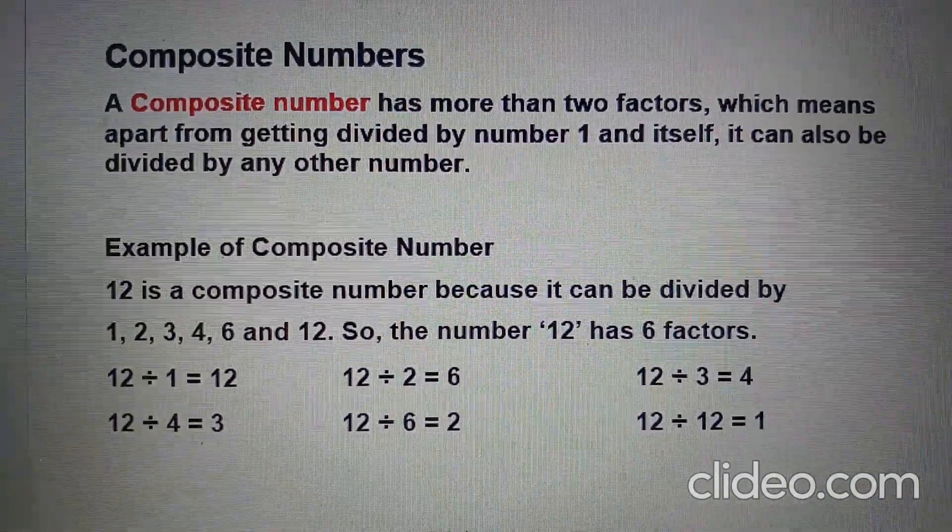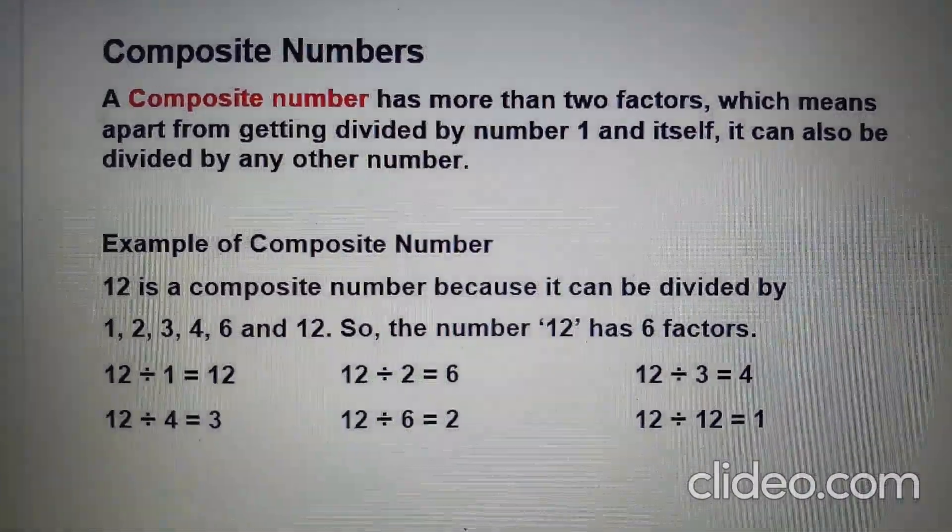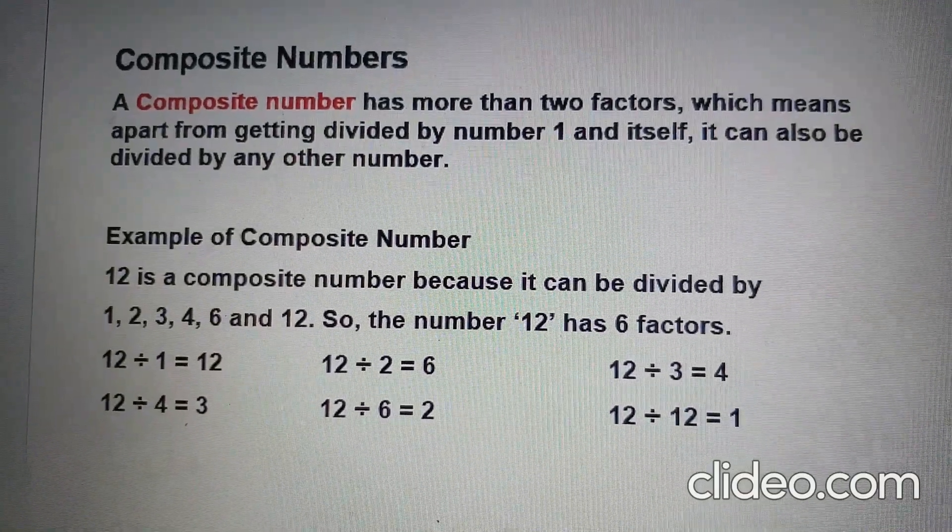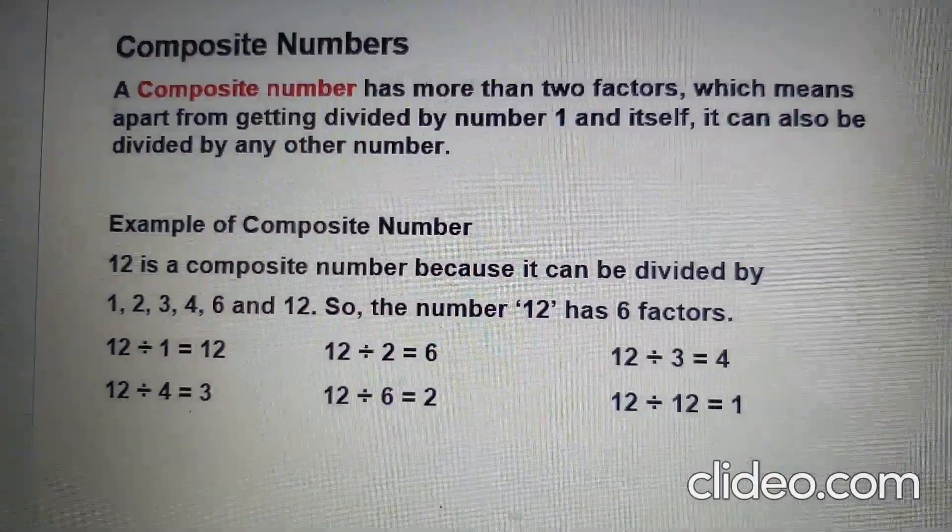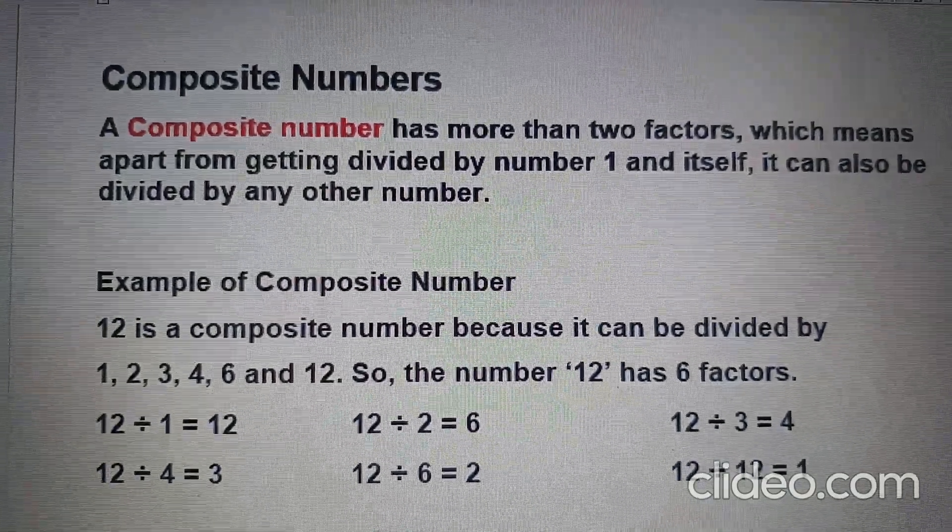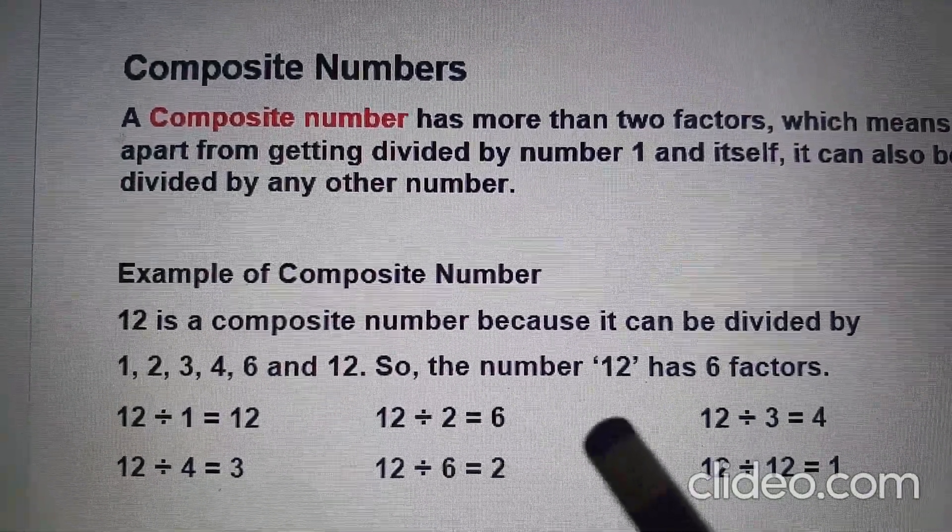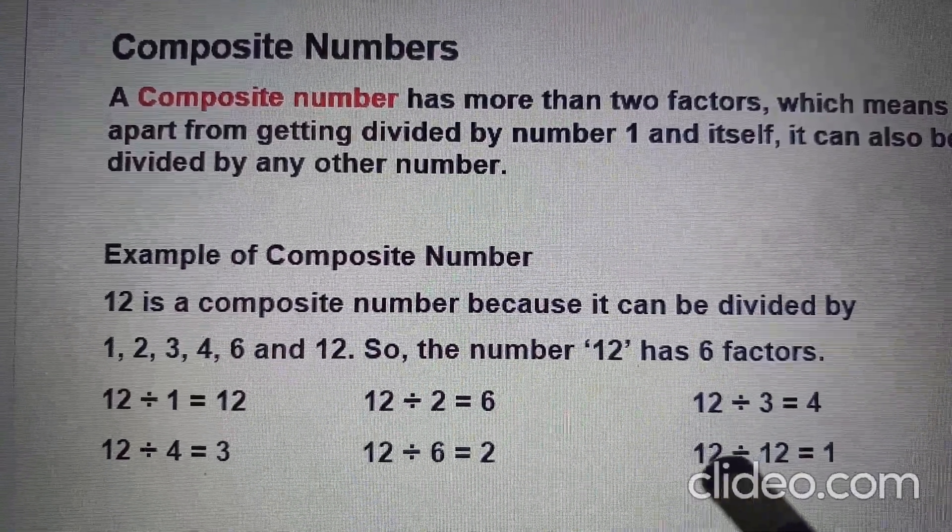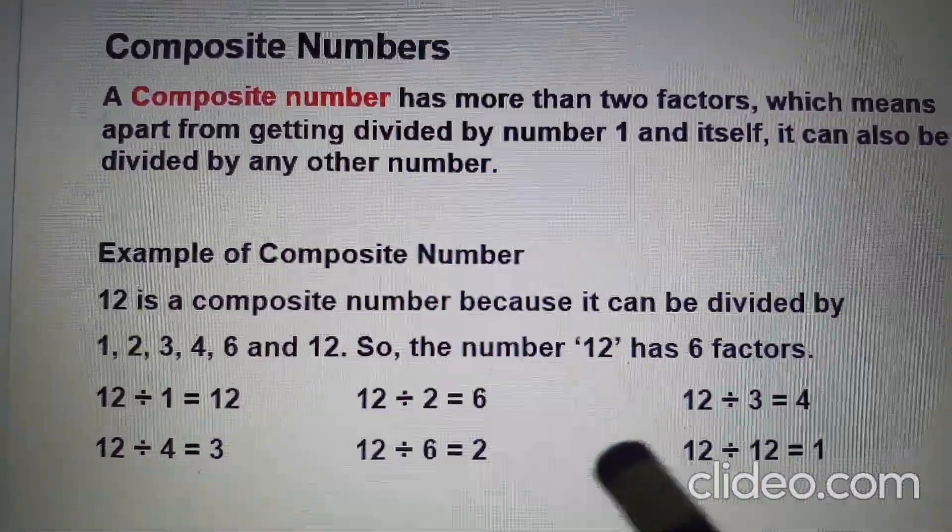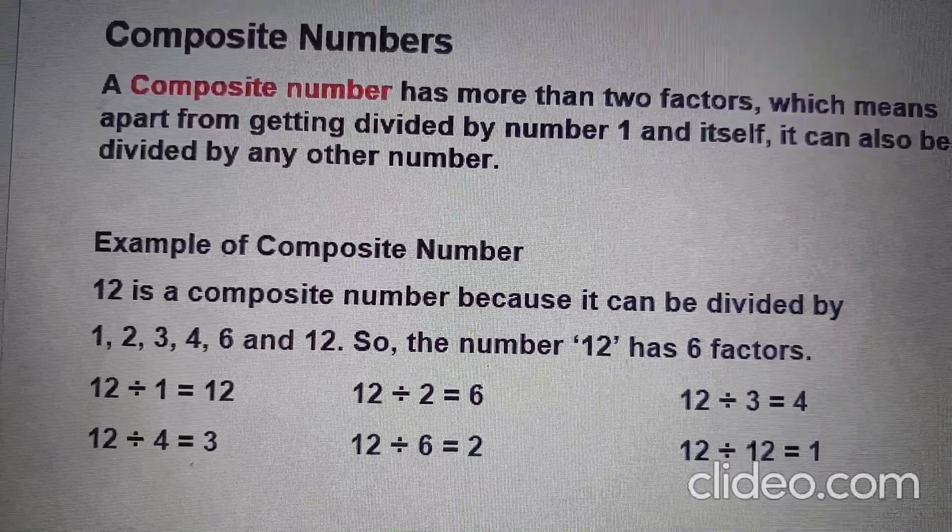Whereas a number that has more than two factors is called a composite number. That means it can be divided by 1, the number itself, and by any other number. Here we see that number 12 can be divided by 1, 2, 3, 4, 6, and 12. Therefore number 12 has 6 factors, so it is a composite number.